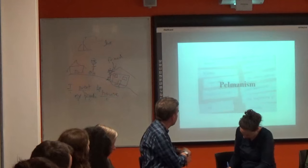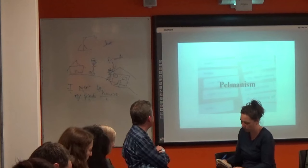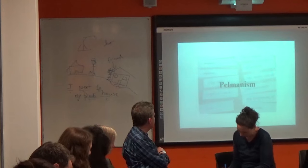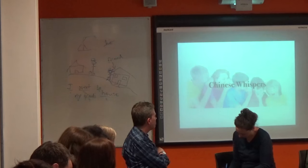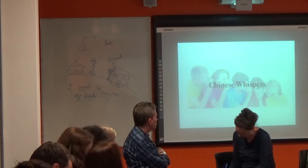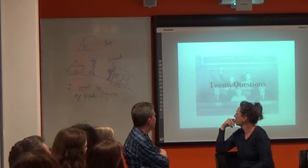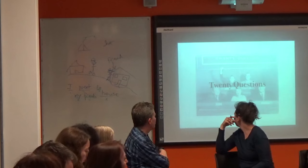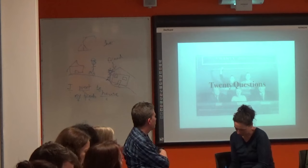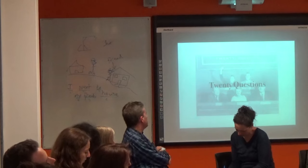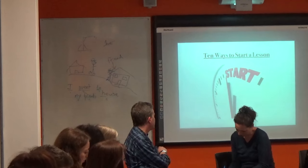Palmanism — you have a flashcard and a word; students match them and turn over. Chinese whispers — line up in two groups, show a word at the back and they whisper it through. Twenty questions — someone at the front has a word shown to them and they have to answer just yes or no while you ask them questions.